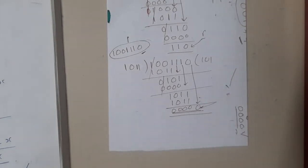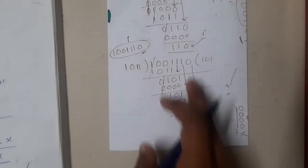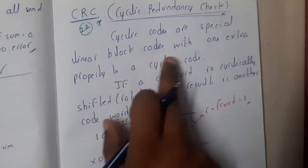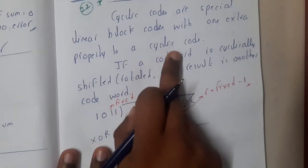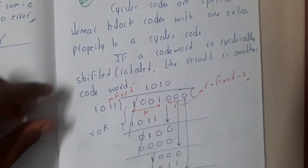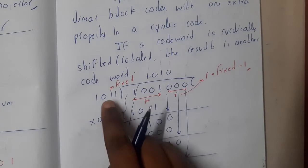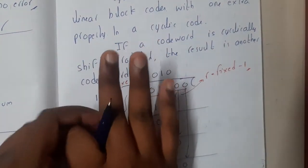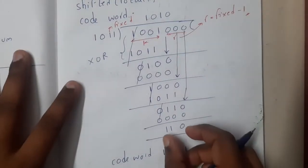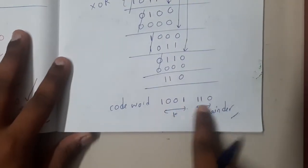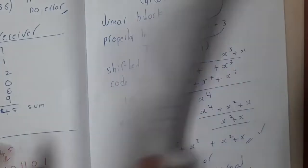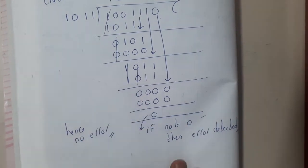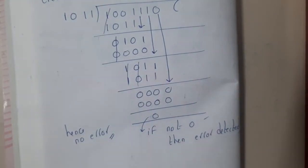This is the concept of Cyclic Redundancy Check — an easy and interesting method. Theoretically, cyclic codes are special linear block codes where if a codeword is cyclically shifted or rotated, the result is another valid codeword. In practice: the sender appends (divisor length minus 1) zeros to the message, performs binary division, and sends the message plus the remainder as the codeword. The receiver divides the received codeword by the same divisor — if the result is zero, the message was received correctly; if not, there is an error and the message must be resent.